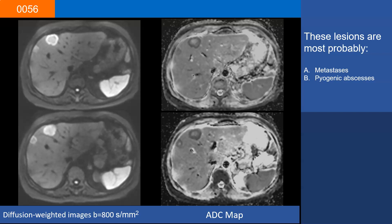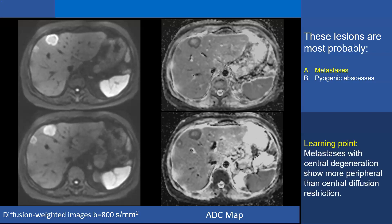Case 56. These lesions are most probably metastases or pyogenic abscesses. On the left-hand side you have diffusion-weighted images with a b-value of 800 s/mm², and on the right-hand side the ADC map. The correct answer is metastases. There is very strong diffusion restriction at the periphery of the lesion, showing as very high signal intensity on DWI and very low ADC on the ADC map, unlike the center of the lesion, which does not show the same degree of diffusion restriction. In an abscess, strong diffusion restriction is expected in the center because pus is very thick and has very high diffusion restriction.